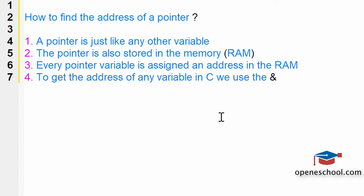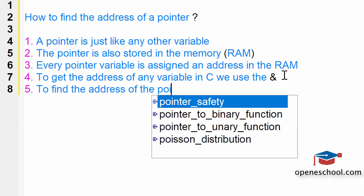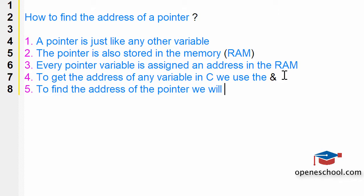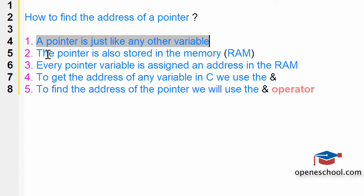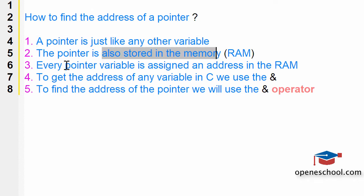When we put the ampersand symbol in front of any variable, it gives us the address of that variable. So, to find the address of the pointer, we will use the ampersand operator. A pointer is just like any other variable, so it is also stored in memory and every pointer variable is assigned an address in the RAM. To get the address in C, we always use the ampersand operator.